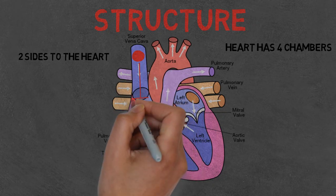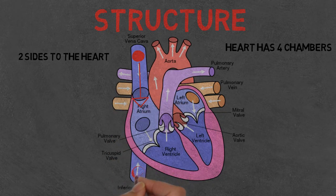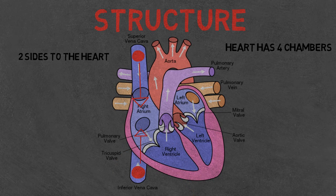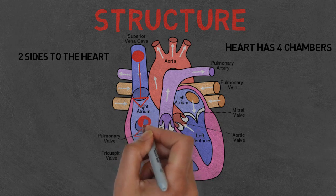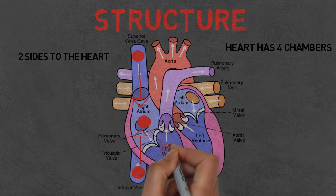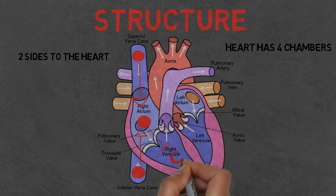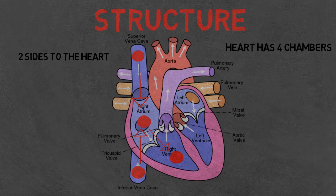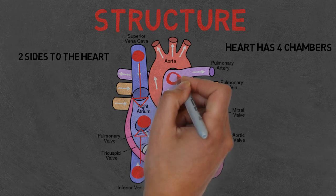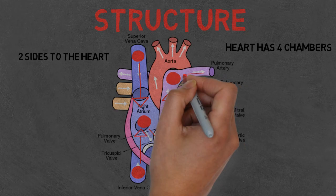If we look at the blood's route through the heart, it enters through either the superior or inferior vena cava. This blood is deoxygenated, meaning it has no oxygen. It then enters the right atrium where it is pumped into the right ventricle. From here it enters the pulmonary artery where it is sent out of the heart to the lungs to become oxygenated.